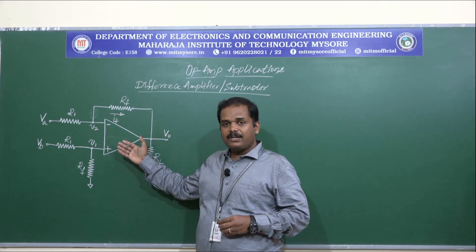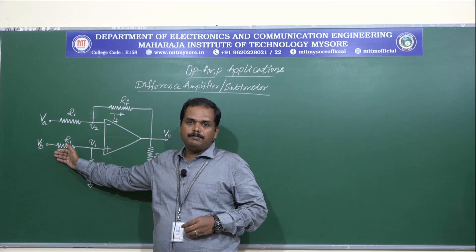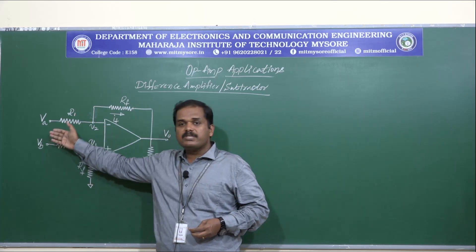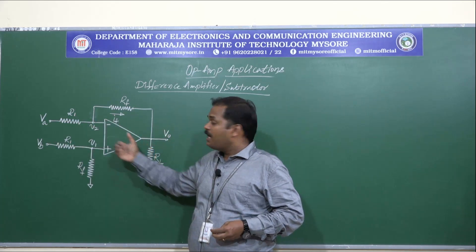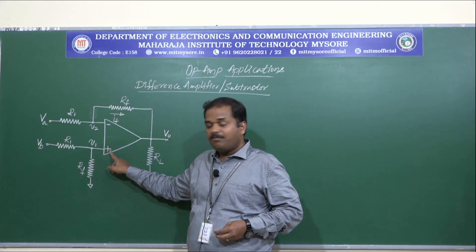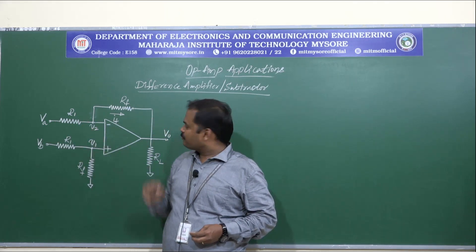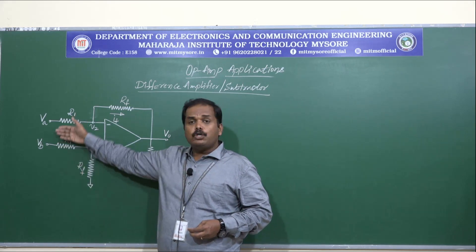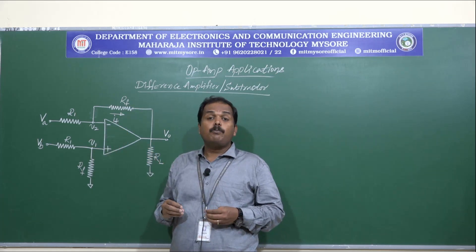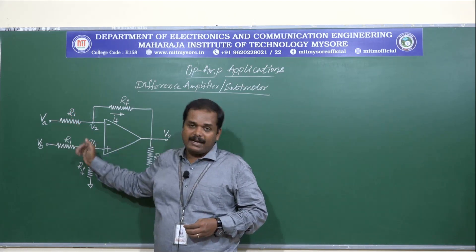As we can see here in the circuit, the difference amplifier has got two inputs VA and VB. So essentially, this circuit would be providing the difference of these two signals. V0 is expected to be VB minus VA, as VB is connected to the non-inverting terminal V1 and VA is connected to the inverting terminal V2.